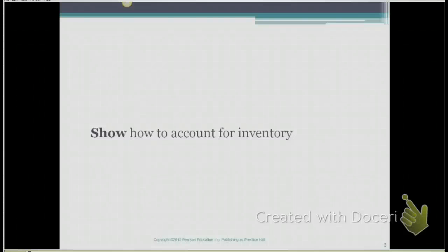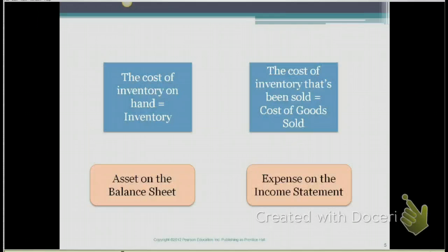In this section, we're going to talk about how to account for inventory. Inventory is items that we have bought with the intent of reselling them. When we buy inventory, it is shown as an asset on the balance sheet. It will be a current asset on your balance sheet.